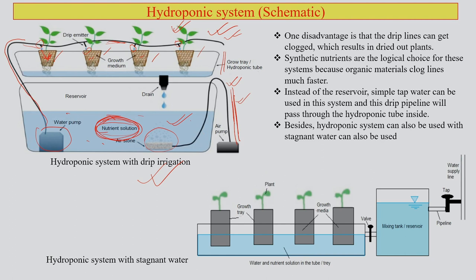Instead of a reservoir, simple tap water can be used in this system, and the drip pipeline can pass through the hydroponic tube. If your water supply into the reservoir is not regular, you can connect directly to a water supply. However, you also need to find a way to supply the nutrient solution to the media. Additionally, stagnant water after rainfall can also be utilized for drip irrigation or the hydroponic system.